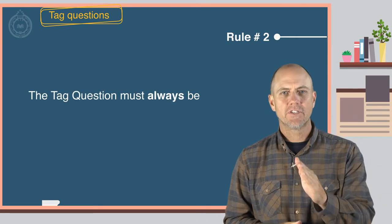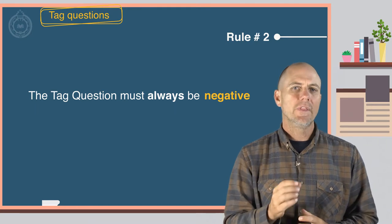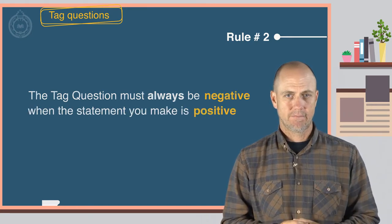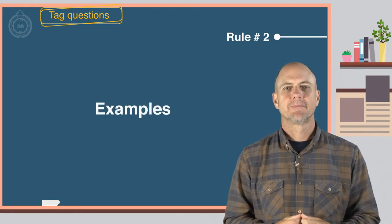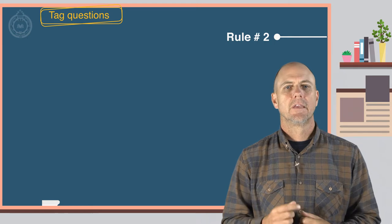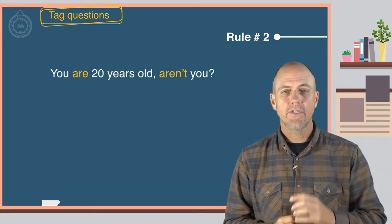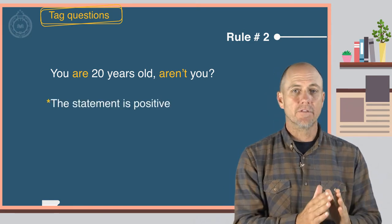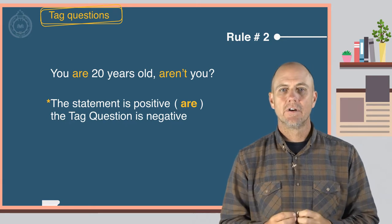The tag question must always be negative when the statement you make is positive. Here are some examples. You are twenty years old, aren't you? The statement is positive, are. The tag question is negative, aren't.